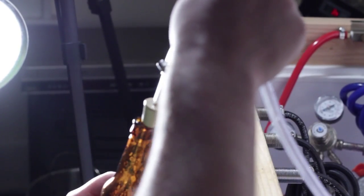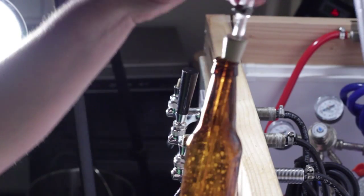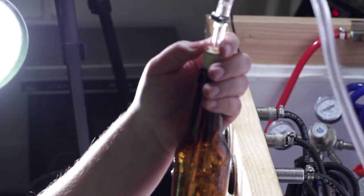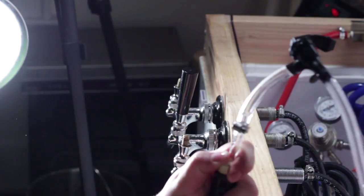Slide the racking cane into the bottle. Adjust the cane so it's at the bottom of the bottle. Press the bung firmly into the top of the bottle to create a seal on the bottle and the cane. Turn the picnic tap on and let the beer flow.